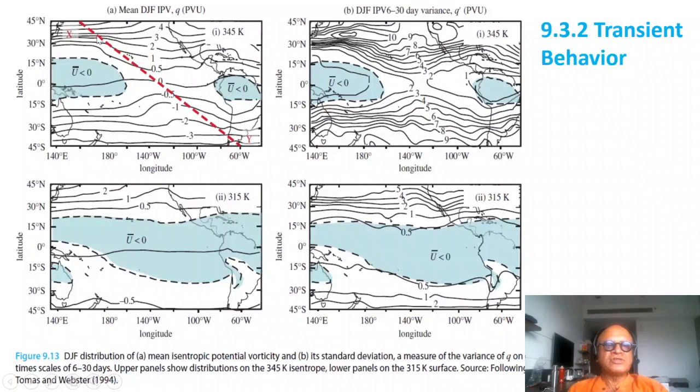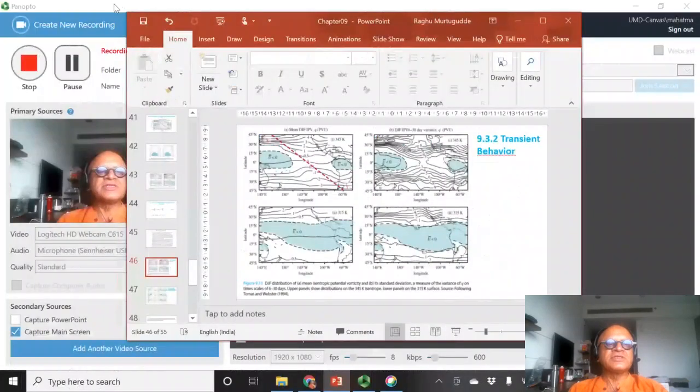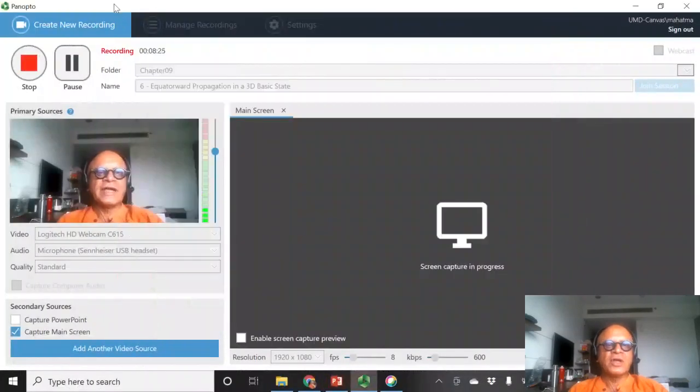With that background, we'll look at the transient behavior of perturbations going from X to Y. Remember that we are not in the meridional or zonal direction, but we are going along this track from the northwest to the southwest through the westerly duct in the deep tropics. That's the setup of our analysis.